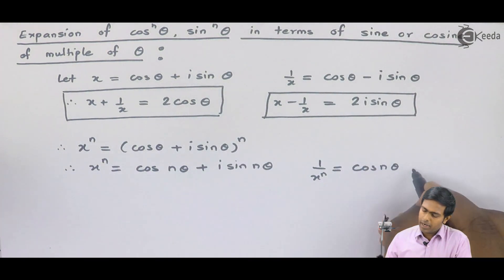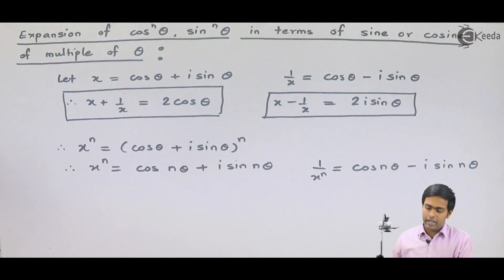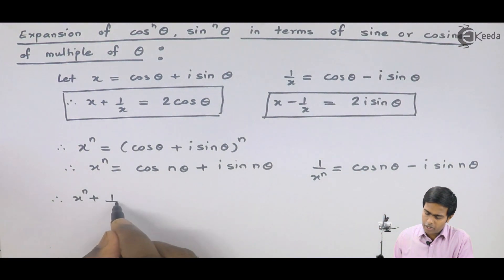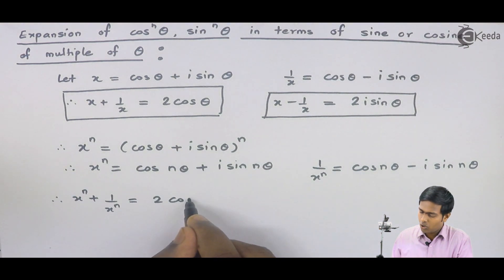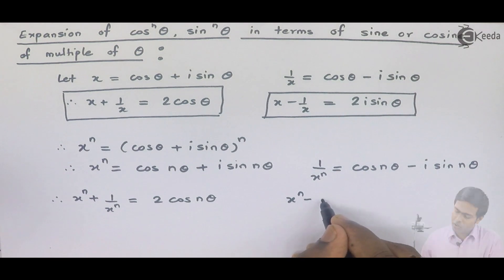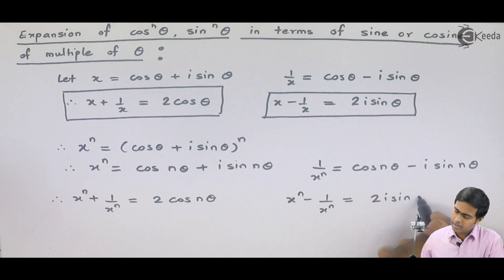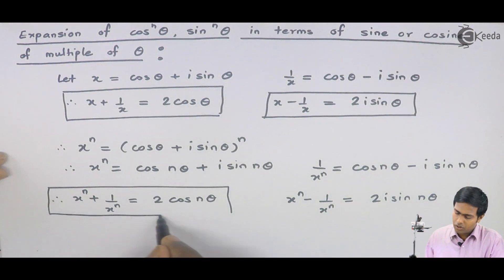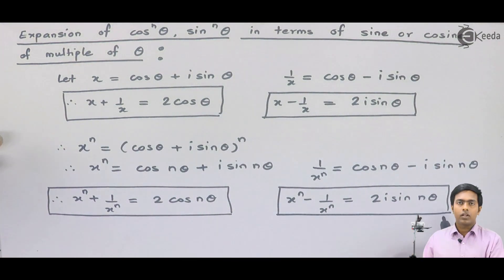Now adding these two terms, x^n + 1/x^n gives 2·cos(nθ), and x^n - 1/x^n gives 2i·sin(nθ). So we again get two new relations which are helpful to prove the results.